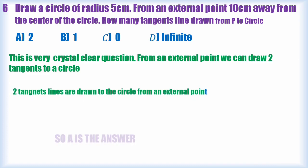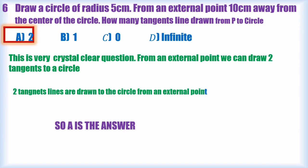Tangent means nothing but the line touch and go around on the circle. Two tangent lines are drawn to the circle from an external point. So A is the answer. A is the correct answer. This is very simple.